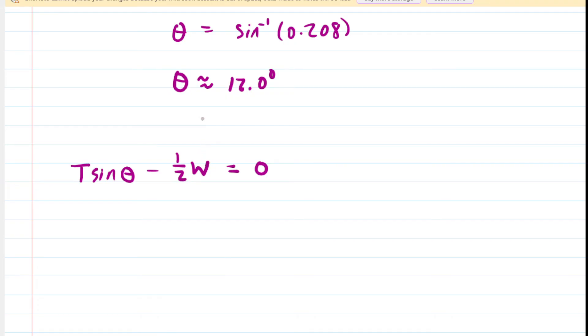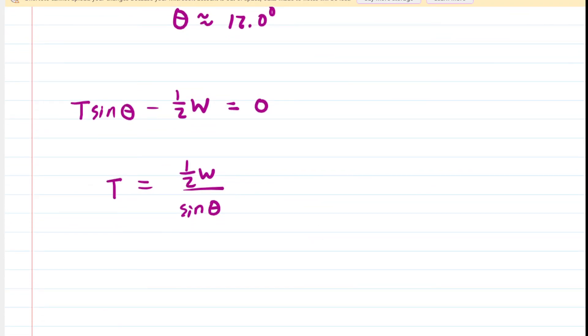So we have this relationship here for tension. Now we don't want the tension to exceed 1200 newtons. So if anything, we would like it to be smaller than or equal to 1200 newtons. Now, if you want to reduce the value of tension in order to prevent it from rupturing, then you'd actually want to increase the value of the denominator.